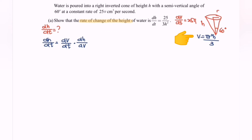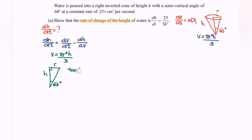Focus on the formula V equals πr²h over 3, and make use of the ratio in the right-angle triangle with the 60-degree angle, height, and radius. As we know, tan(60°) equals opposite over adjacent, which is r over h. Pressing the calculator for tan(60°) gives √3 equals r over h, so r equals √3 multiplied by h.